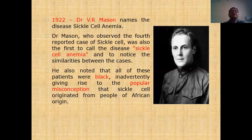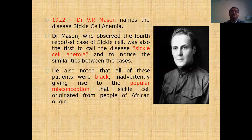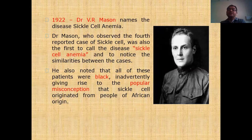Dr. Mason named the disease 'sickle cell anemia' after observing the fourth report. He noticed similarities between all the cases and noted that all these patients were Black, inevitably giving rise to the popular misconception that sickle cell originated from African peoples. Nowadays, sickle cell anemia is said to be mostly found in African people. However, a major advantage is that those people are not suffered by malaria-type diseases.